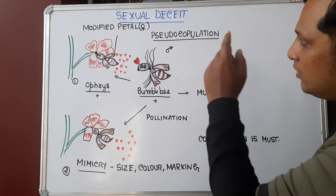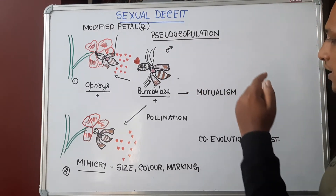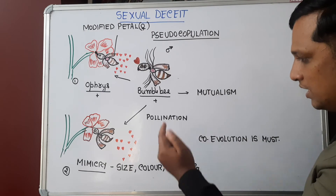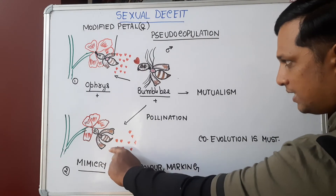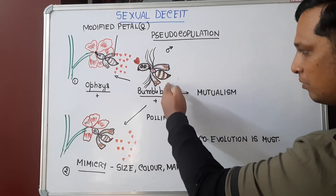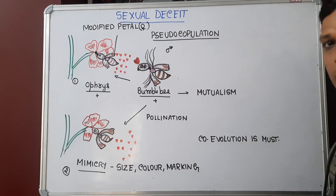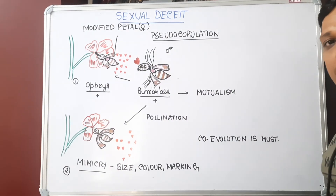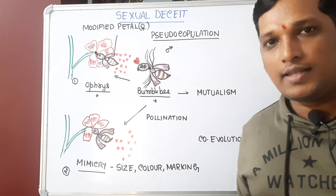So these are the things we have learned: sexual deceit, pseudo-copulation, mutualism, pollination, and mimicry — mimicry is shown by the petal, pseudo-copulation is shown by the bee — and co-evolution. I hope you have liked it. If you liked it, please click the like button. Thank you.